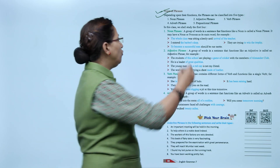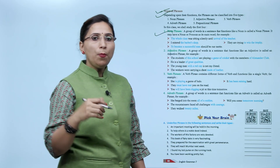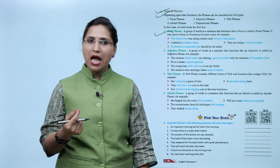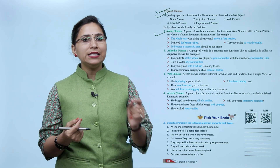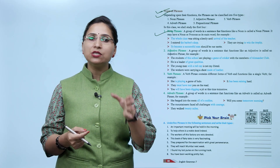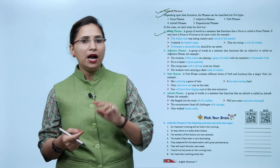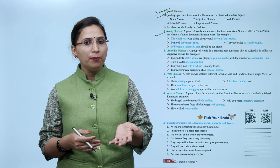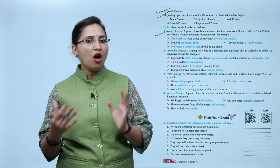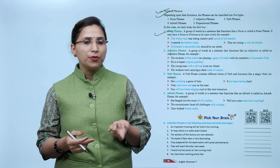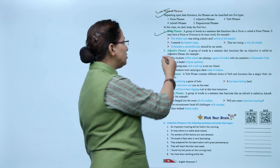First is noun phrases. A group of words in a sentence that functions like a noun is called a noun phrase. It may have a noun or pronoun as its main word. For example: 'The whole class was sitting silently until the arrival of the teacher.' 'I entered the barber shop.' 'They are trying to win the trophy.' 'To become a successful man should be our motto.'